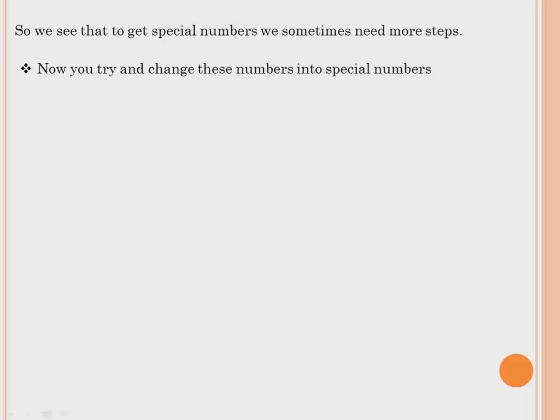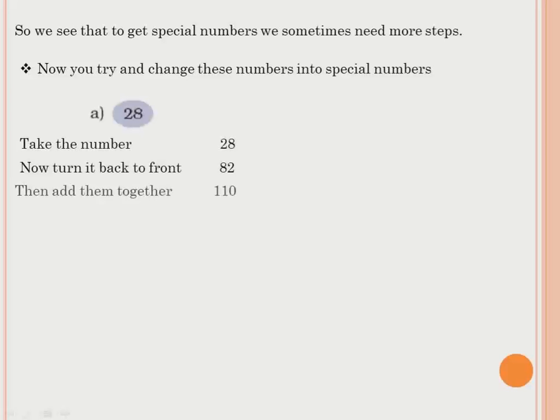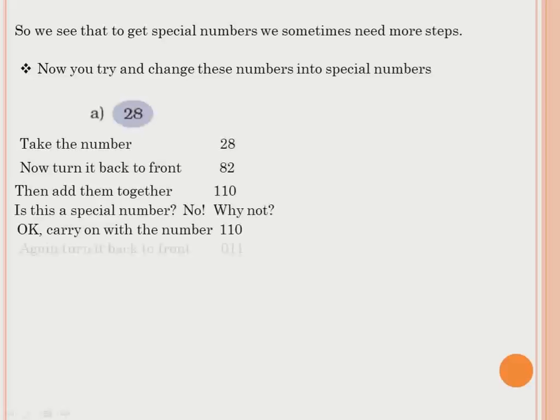Now you try and change these numbers into special numbers. Take the number 28. Reverse it to get 82. Add: 28 plus 82 equals 110. Reverse 110 to get 011, which is 11 — not a special number. So take 110, reverse it to get 011 (11), add: 110 plus 11 equals 121. That is a special number!